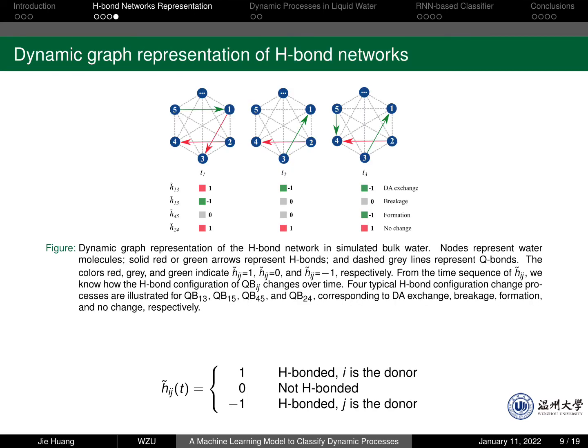As we have the geometric standard for hydrogen bonds, it is easy for us to know the donor and acceptor relationship between two water molecules i and j. So we define the variable h-tilde to indicate the relationship. If h-tilde_ij(t) is 0, which means that the two water molecules i and j are not H-bonded. Otherwise, if this value is 1, which means the hydrogen bond is formed between the two water molecules. However, in this case, i is the acceptor and j is the donor.